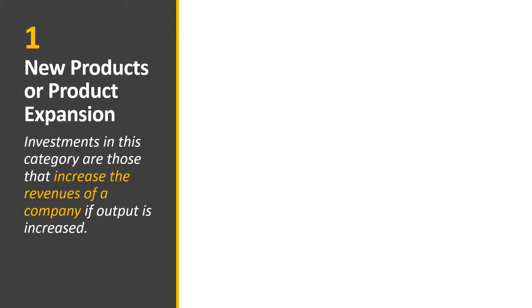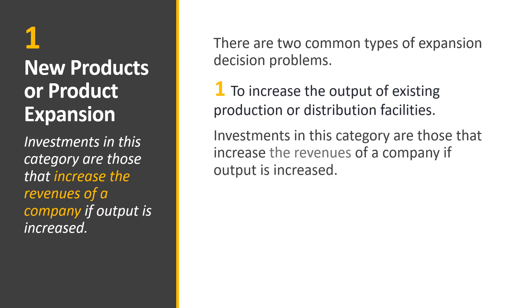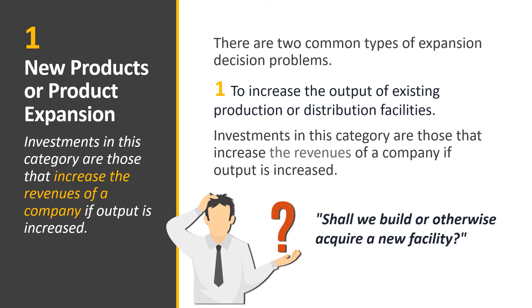The first type is new products or product expansion. Investments in this category are those that increase the revenues of a company if output is increased. There are two common types of expansion decision problems. The first is to increase the output of existing product or distribution facilities. If you increase your output — say from 100 to 200 units — your revenue automatically grows. The question is: shall we build or otherwise acquire a new facility?